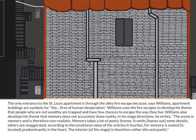Williams uses the fire escapes to develop his theme that people who are not wealthy are trapped and have few chances to escape the way they live. Williams also develops his theme that memory does not accurately show reality.